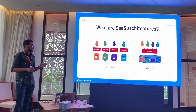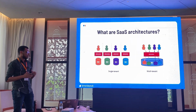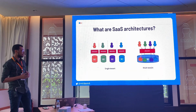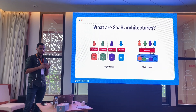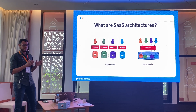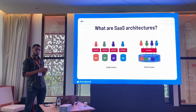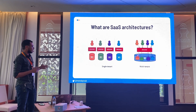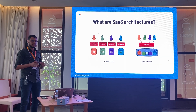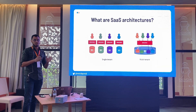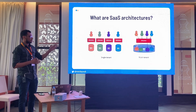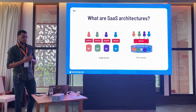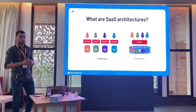For SaaS architecture, there are mainly two architectures: single tenancy and multi-tenancy, with some hybrid models between them. In single tenancy, you create an instance of the application for every user. While in the multi-tenancy model, there is one instance of the application shared between all users.